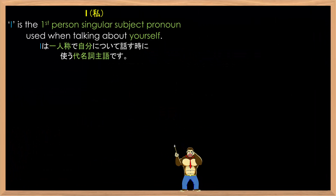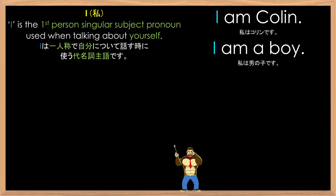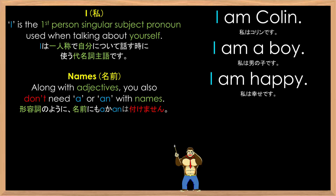Let's begin. I is the first person singular subject pronoun used when talking about yourself, such as in: I am Colin. I am a boy. I am happy. Along with adjectives, you also don't need 'a' or 'an' with names, as you can see with Colin — there's no 'a'.